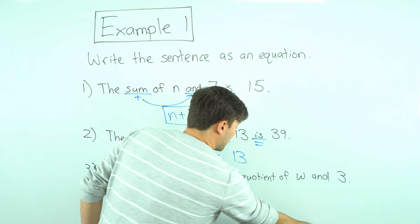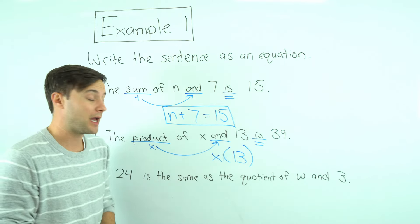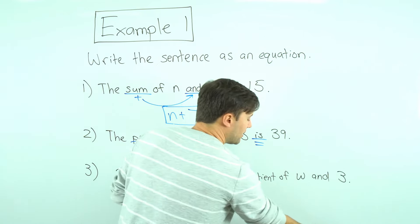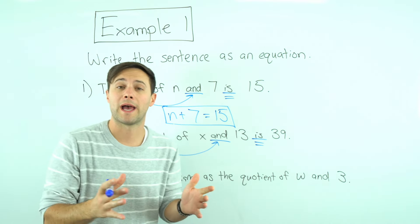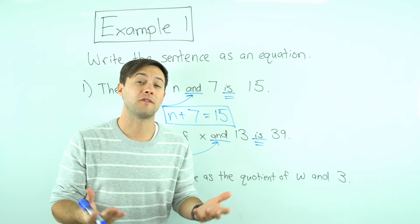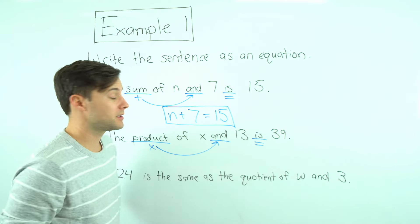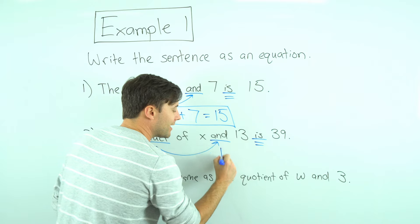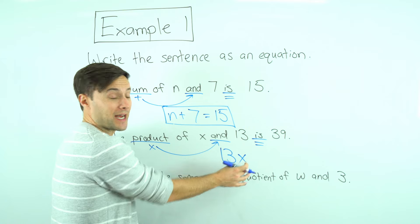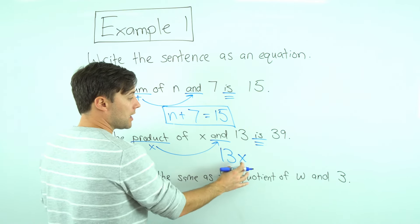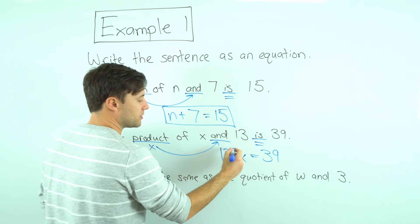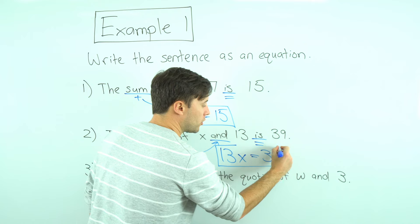When we have a number multiplied by a variable, the number or the coefficient always comes first. So even though it's x times thirteen, we write it as thirteen x. Thirteen x means thirteen times x, which is the same as x times thirteen, equals thirty-nine. Two expressions that are equal to each other. And that is my equation.